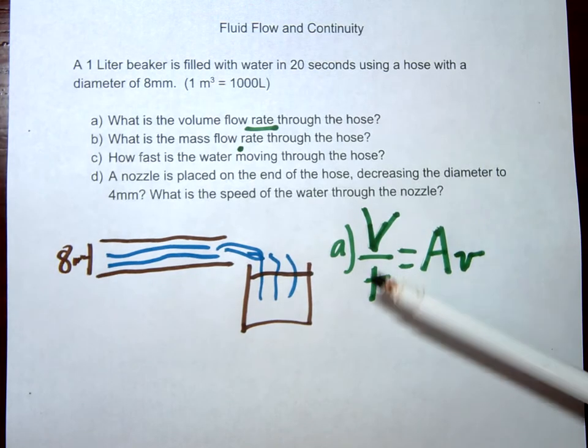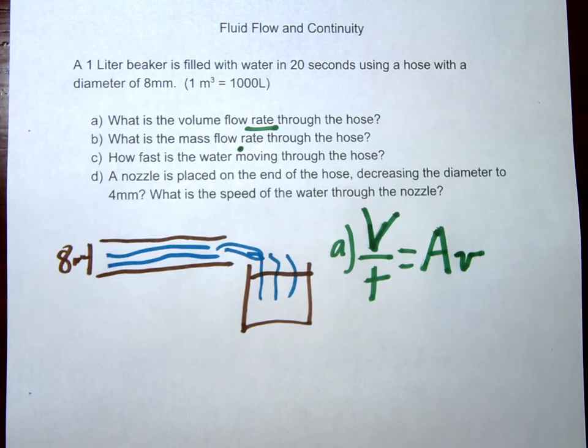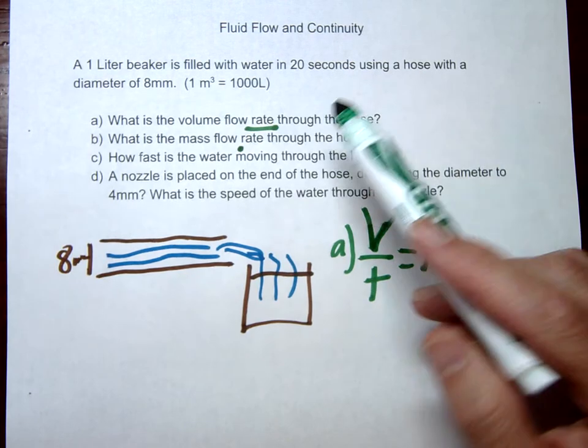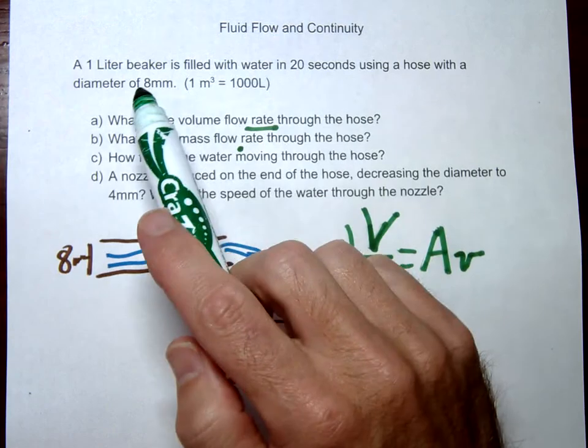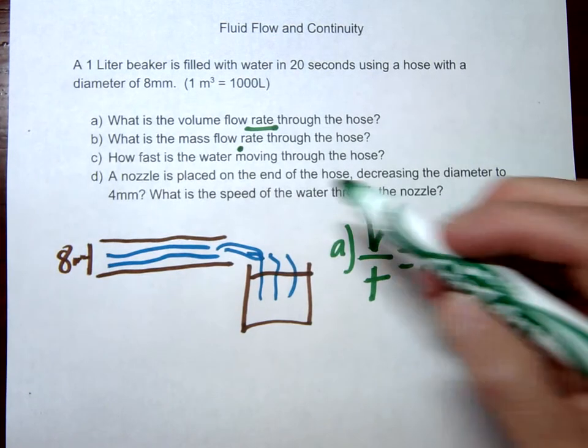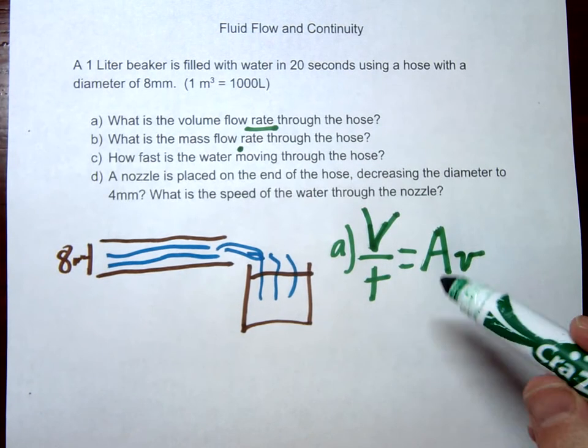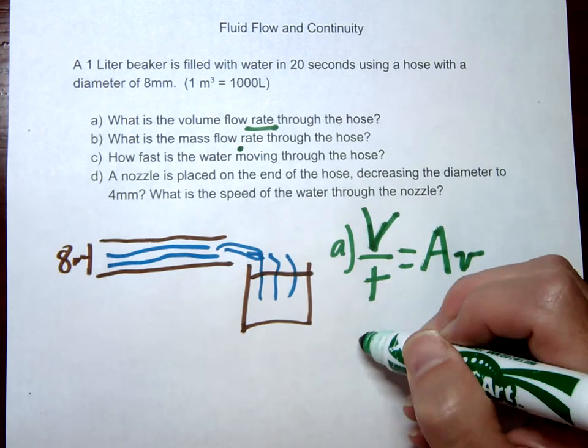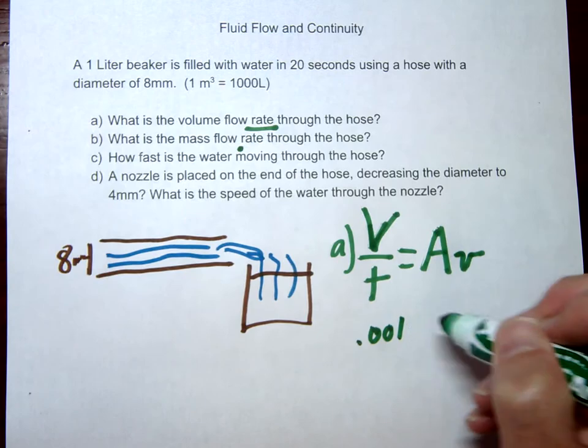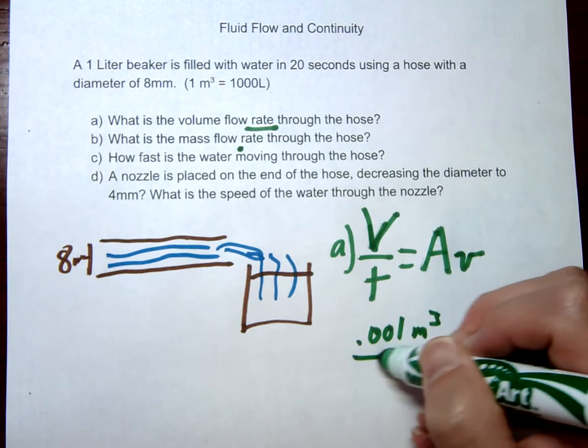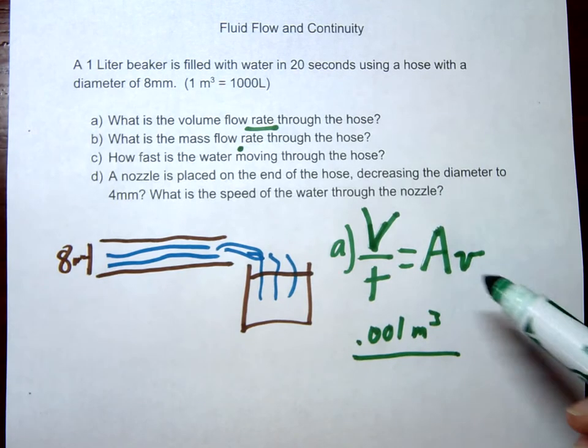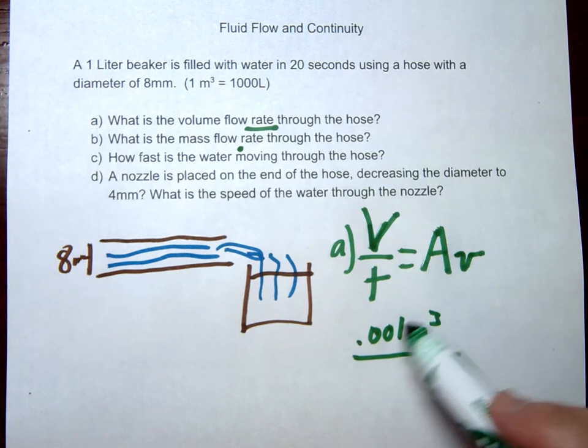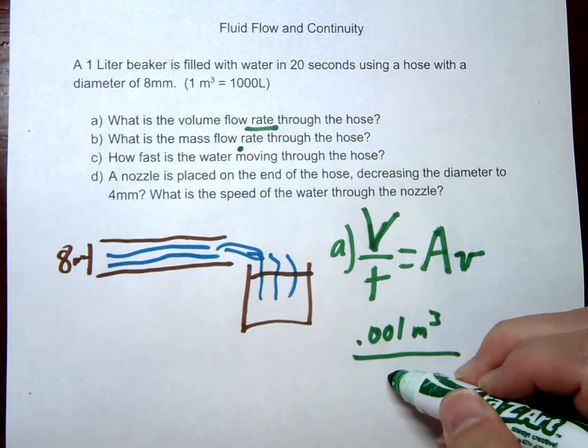So in this case you just kind of look at what's been given to you and see which of these is going to work to find your volume flow rate. In this particular case, they give us the time and they give us the volume. So one liter, as you can see, or one meter cubed is equal to 1000 liters. So in other words, .001 meter cubed is equal to one liter. So this is the amount of volume we're going to fill up and that took 20 seconds.